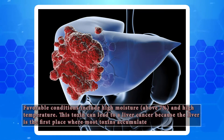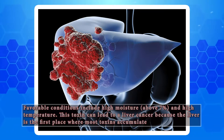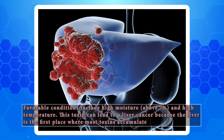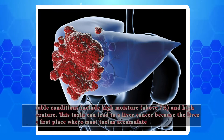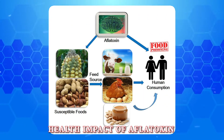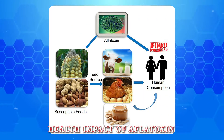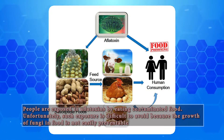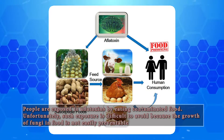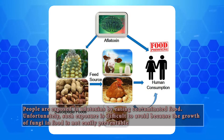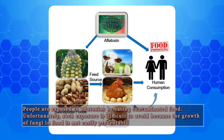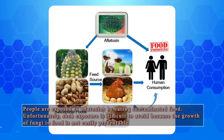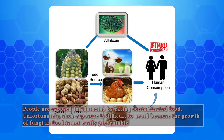This toxin can lead to liver cancer because the liver is the first place where most toxins accumulate. People are exposed to aflatoxins by eating contaminated food. Unfortunately, such exposure is difficult to avoid because the growth of fungi in food is not easily preventable.